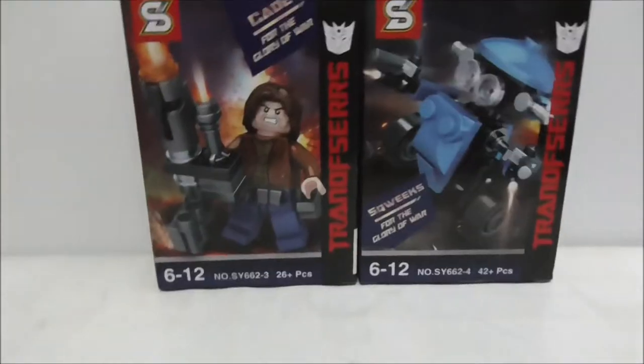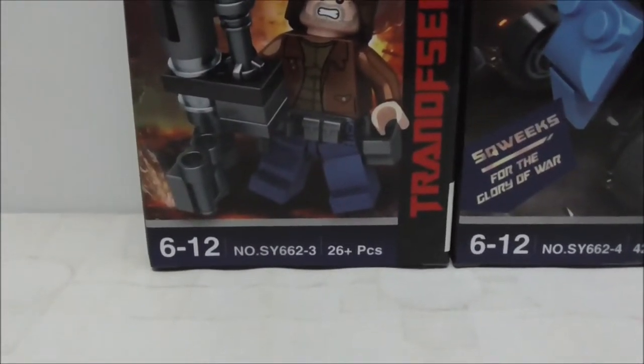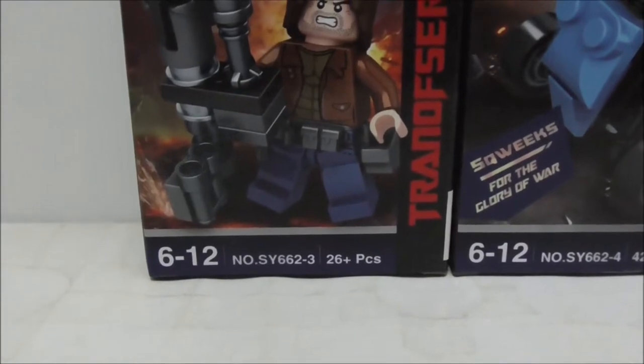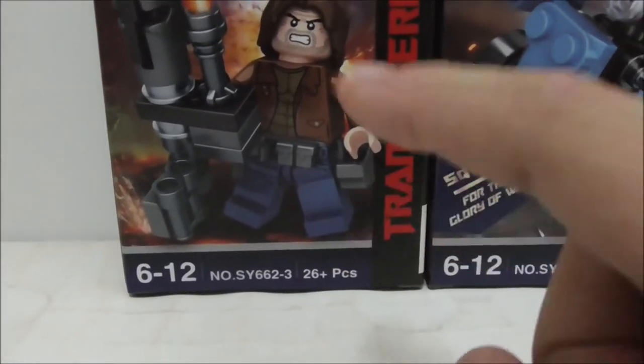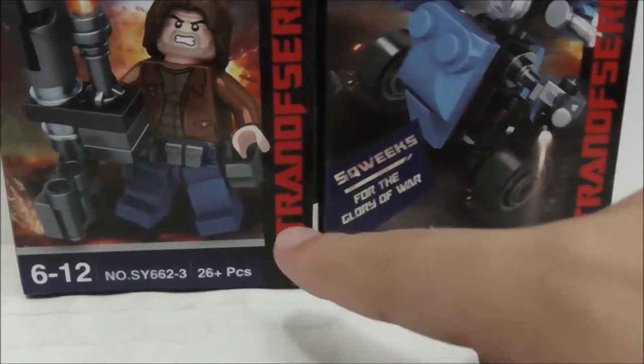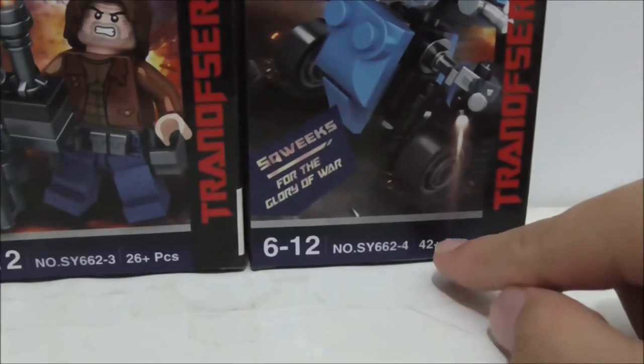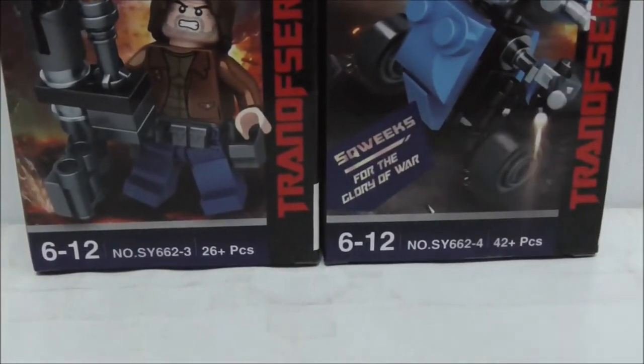These are the boxes here. You can see it's recommended for ages 6 to 12, and this is SY662. The Cade one is number 3 and the Squeaks one is number 4. This one comes with 26 pieces and the Squeaks one comes with 42 pieces.